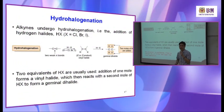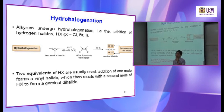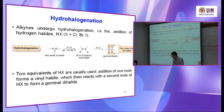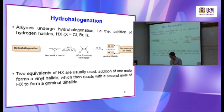Now we move to hydrohalogenation — meaning adding HX to an alkyne. The mechanism is slightly different. Alkyne undergoes hydrohalogenation with hydrogen halide (HX), where X can be chloride, bromide, or iodide. This is the first step, which you have studied before.